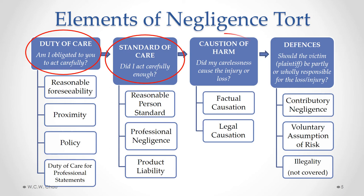The next element is causation of harm. The general question we ask is: did my carelessness cause the injury or loss? If there is causation of harm, the last thing we look at is defenses — specifically whether the victim, the plaintiff who started the lawsuit, should be partly or wholly responsible for the loss or injury, and whether the plaintiff did something to actually cause that harm or loss.